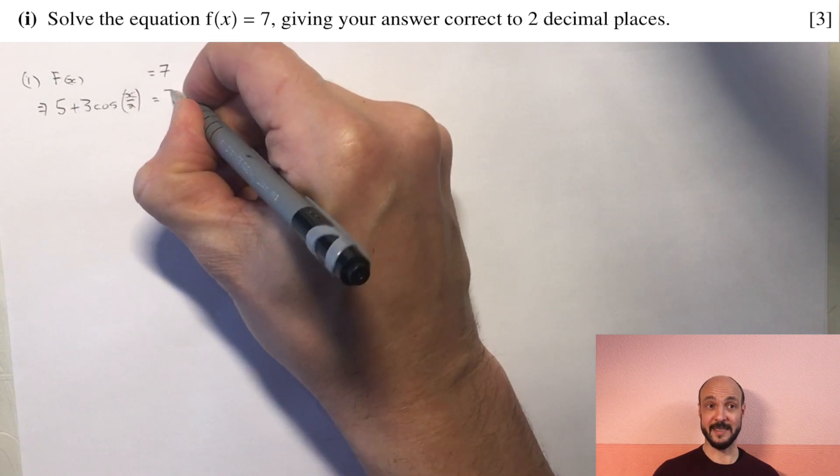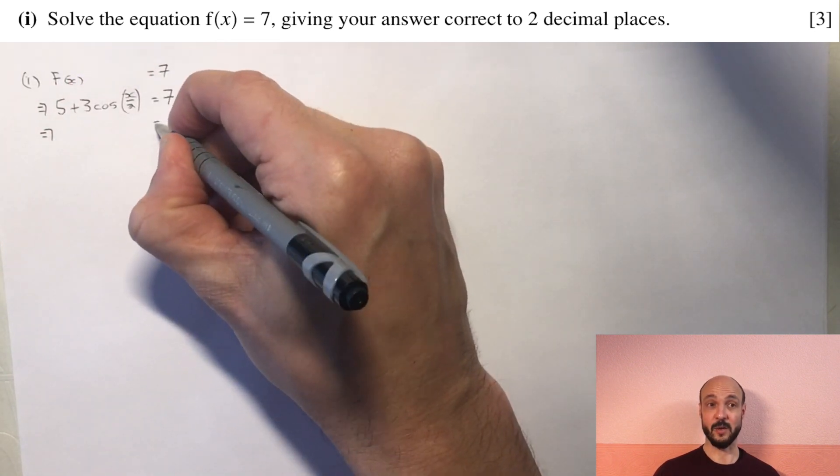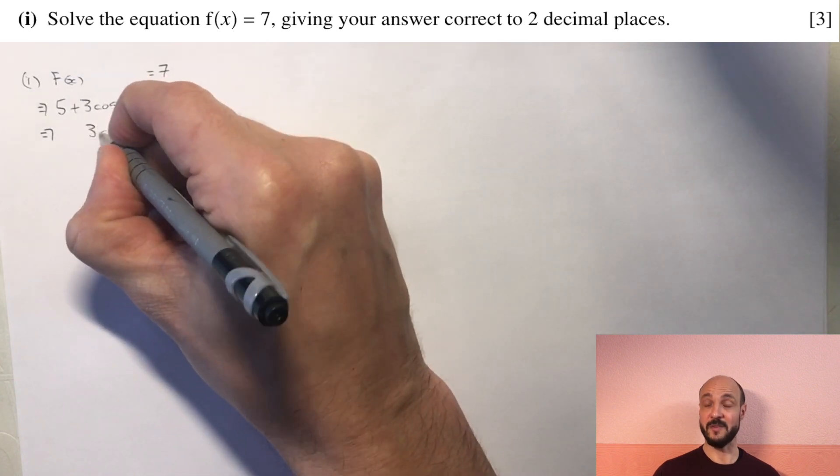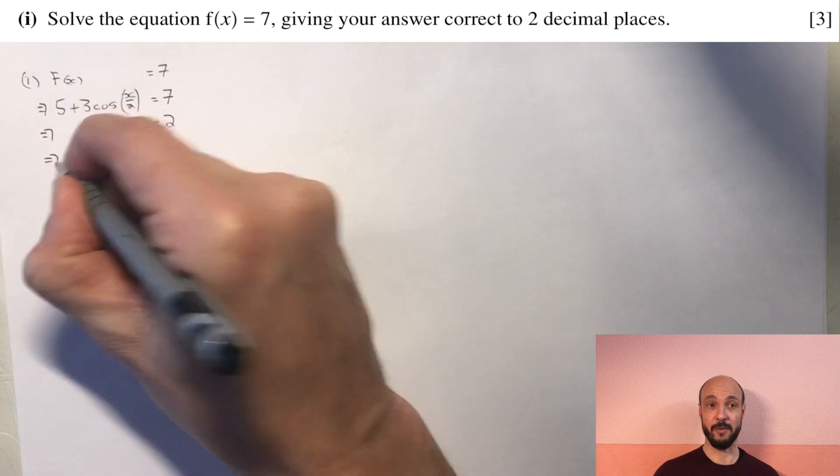So we subtract 5 from both sides to give us 3 cosine of x over 2 equals 2. And then we divide both sides by 3 to give us the cosine of x over 2 equals 2 over 3.